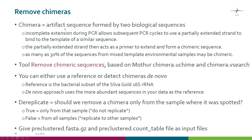Chimeras are artifact sequences formed by two or more biological sequences, and they arise during PCR amplification. If there is incomplete extension during PCR, then in subsequent PCR cycles a partially extended strand can bind to the template of a similar sequence, and then acts as a primer to extend and form a chimeric sequence.